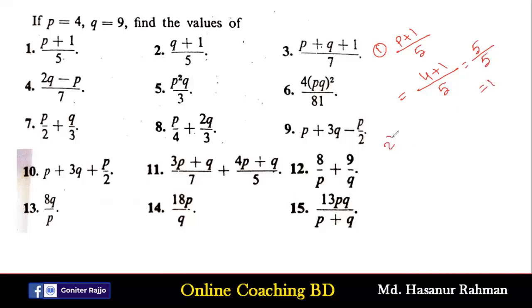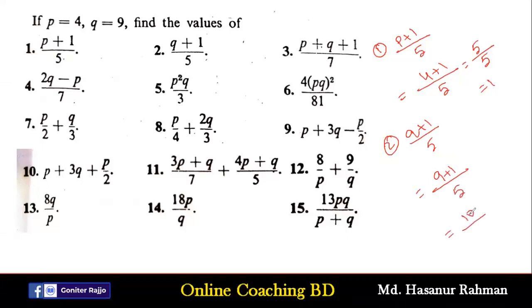Number 2: (q+1)/5. The value of q is 9, so instead of q we put 9 here. 9 plus 1 by 5 — 9 plus 1 is 10, and 10 divided by 5 equals 2.